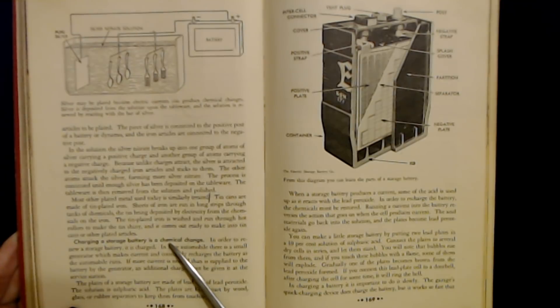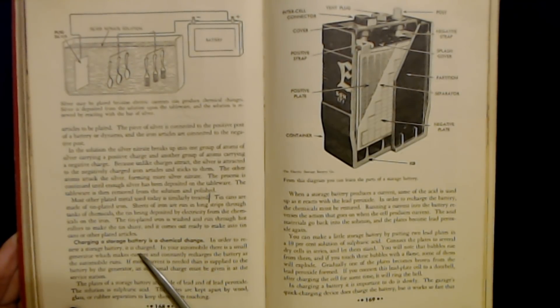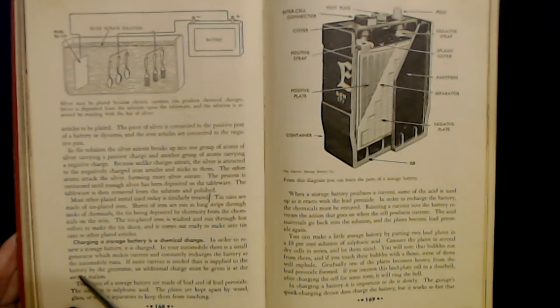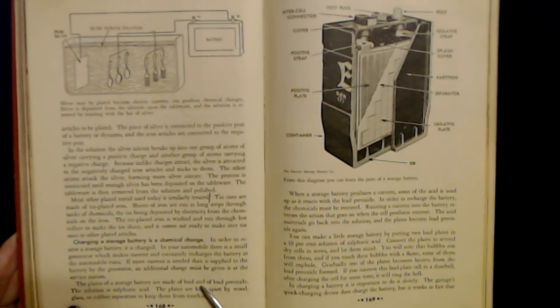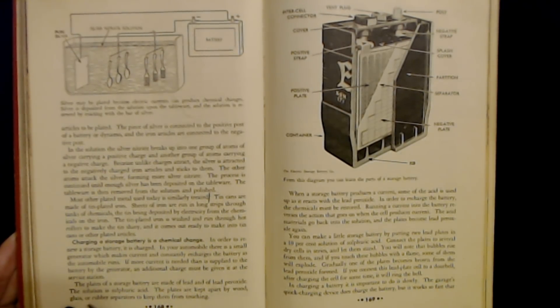Charging a storage battery is a chemical change. In order to renew a storage battery, it is charged. In your automobile, there is a small generator which makes current and constantly recharges the battery as the automobile runs. If more current is needed than is supplied to the battery by the generator, an additional charge must be given it at the service station. The plates of a storage battery are made of lead and of lead peroxide. The solution is sulfuric acid. The plates are kept apart by wood, glass, or rubber separators to keep them from touching.